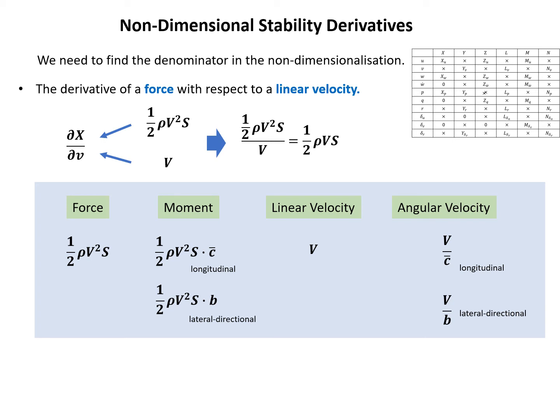As another example, consider ∂N/∂r. Looking up the table: N is a yawing moment, which is lateral-directional, so we choose ½ρV²Sb. Then r is a lateral-directional angular rate, so we choose V/b. Combining these, the denominator for ∂N/∂r becomes ½ρVSb².